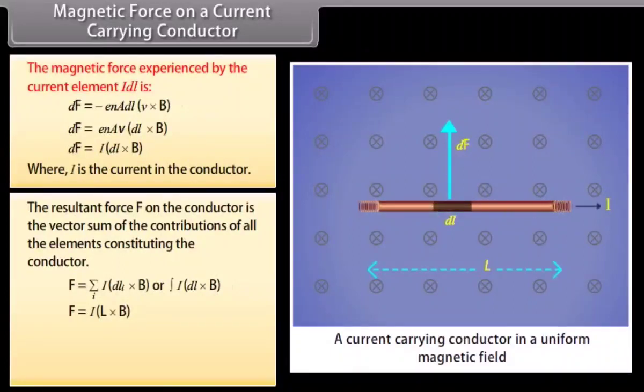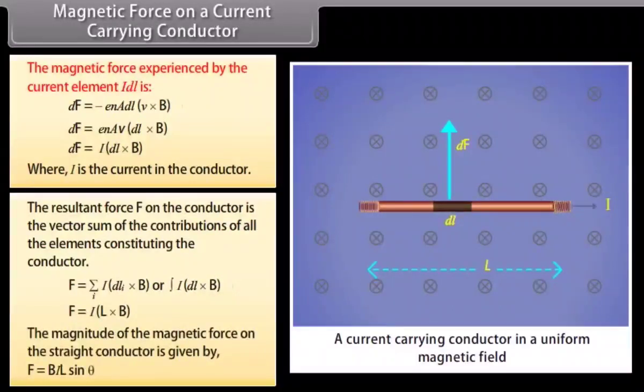We get the result F = I(L × B). The magnitude of the magnetic force on a straight conductor is given by F = BIL sinθ.